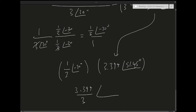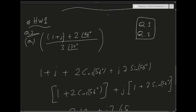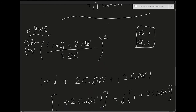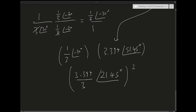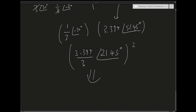Now I multiply the two polar numbers together: (3.399/3)∠(51.45° − 30°) = 1.133∠21.45°. Now I need to square this result. Squaring means the magnitude is squared and the angle is doubled: (3.399/3)² at angle 21.45° × 2 = 42.9°.